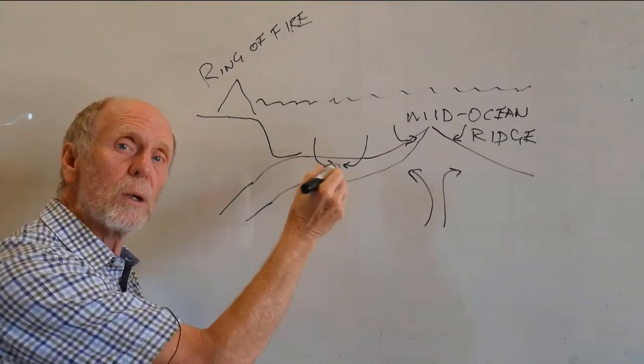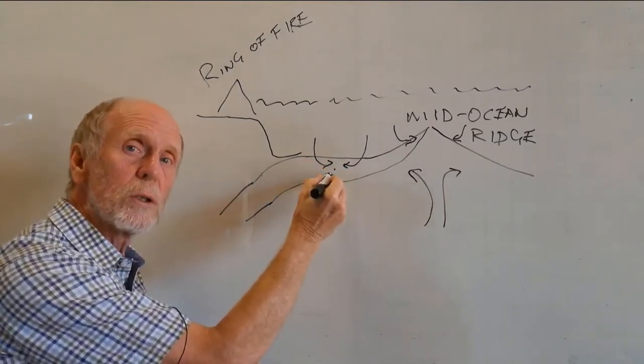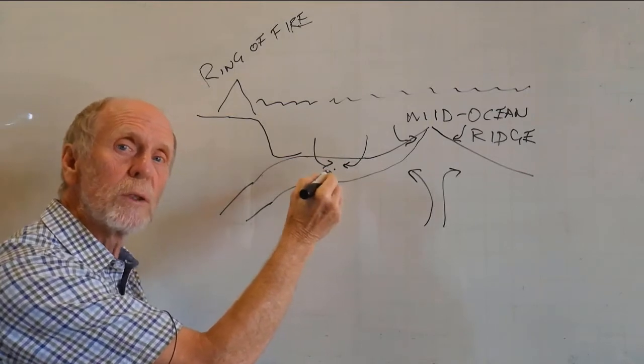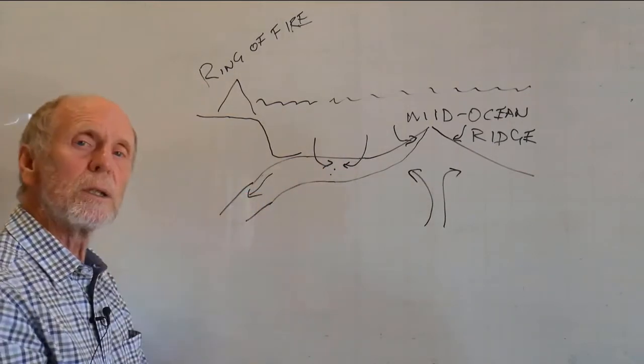And in fact, the carbon dioxide that's dissolved in the ocean also makes new minerals in the ocean crust. So you have both hydrated minerals and carbonates going down into the interior of the Earth.